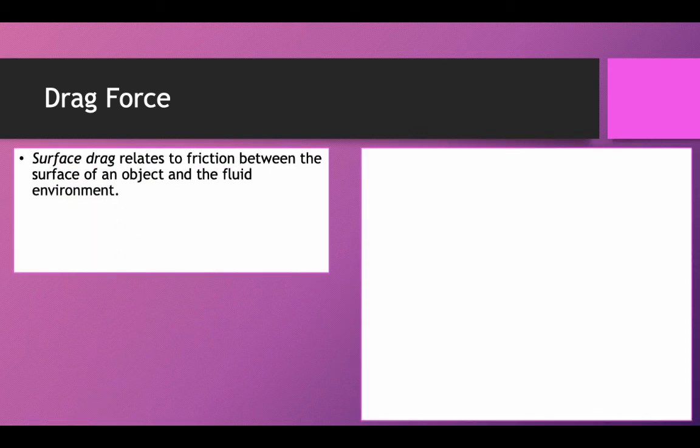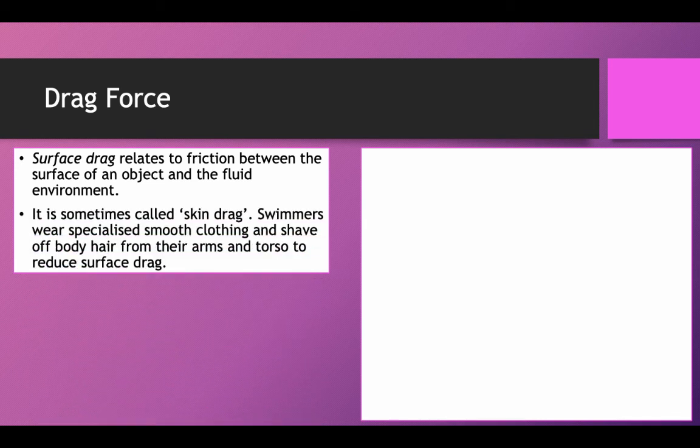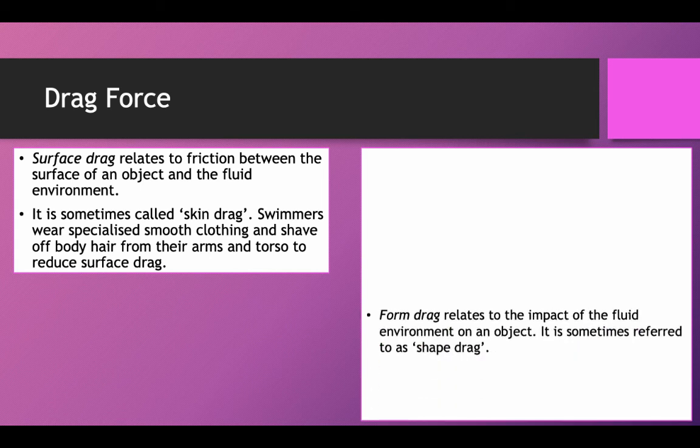Surface drag relates to the friction between the surface of an object and the fluid environment. It is sometimes called skin drag. Swimmers wear specialised smooth clothing and shave off their body hair from their arms and torso to reduce surface drag.